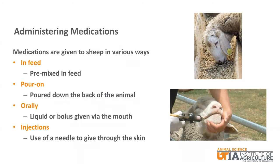Medications are administered to sheep in various ways. One way is through feed. These substances would be mixed into the feed ration to form a medicated feed. A couple of examples of this would be dewormers and ionophores like lasalocid. Next is pour-on. Pour-on products are typically poured down the back of the animal. There are examples of pour-on products that are used for external parasites like lice.